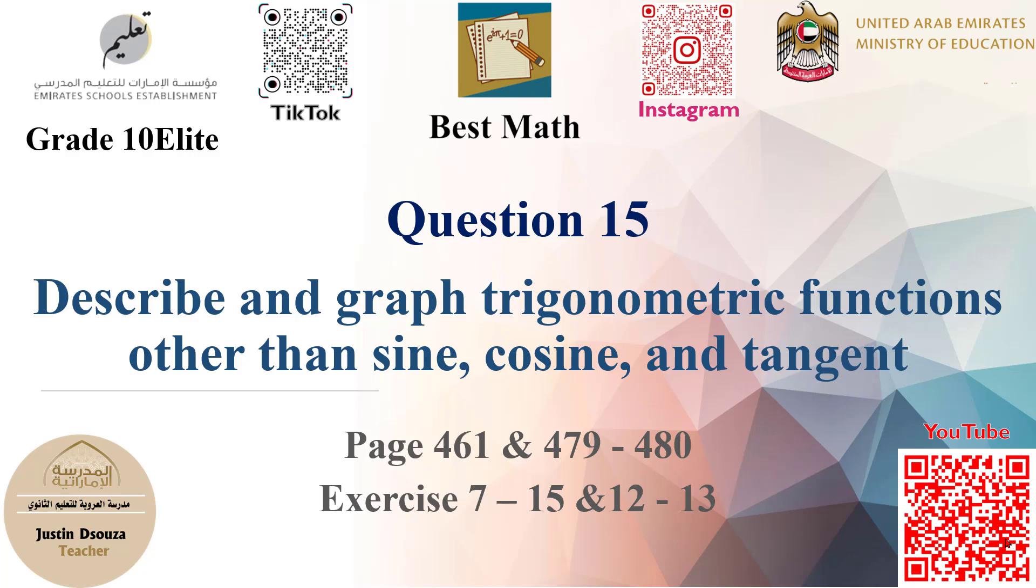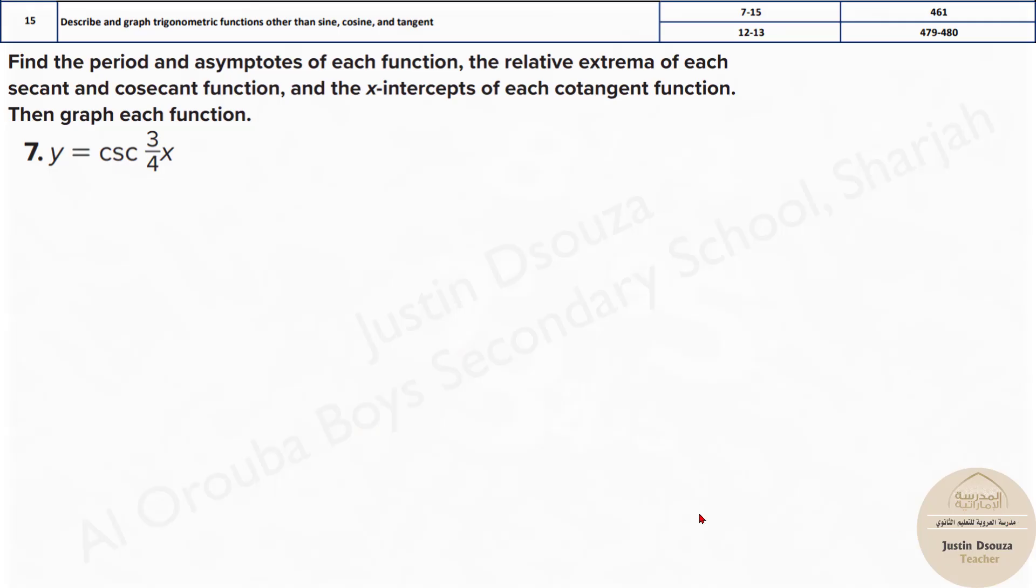Question 15 is to graph the reciprocal functions—cosecant, secant, and cotangent. We've been given this equation and need to graph it. This is question number 15, the last question in the first part, the MCQ part. You'll have four graph answers and need to choose the correct one.